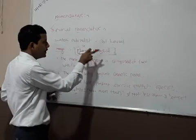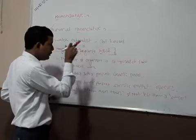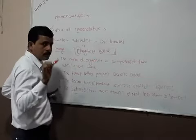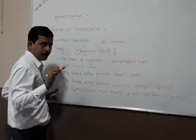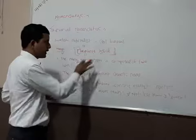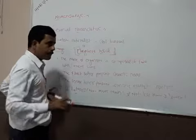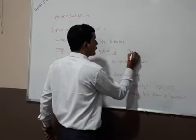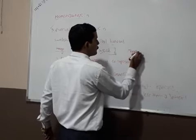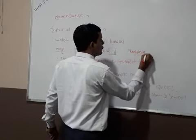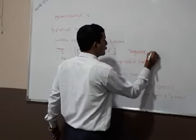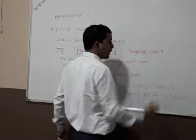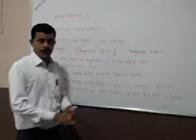In binomial nomenclature, not less than 3 letters and not more than 13 letters. When we write in simple form it must be underlined separately, but when we write in italic script there is no need to underline the binomial name.